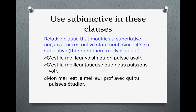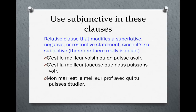C'est le meilleur voisin qu'on puisse avoir — it's the best neighbor that one could have. It's kind of like saying, mommy, you are the best mommy in the whole wide world. There's a lot of opinion there, and where there's opinion, we use subjunctive. C'est la meilleure joueuse que nous puissions voir — she's the best player we could possibly see. Mon mari est le meilleur prof avec qui tu puisses étudier — my husband is the best teacher with whom you could study. There's tons of opinion, that's why you use the subjunctive.